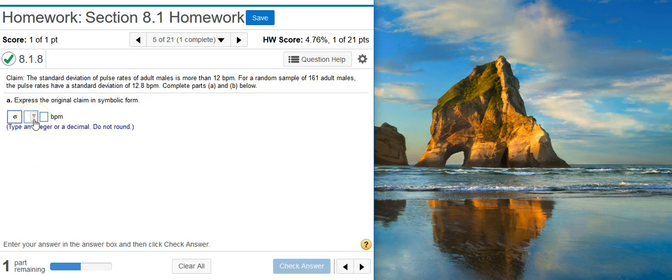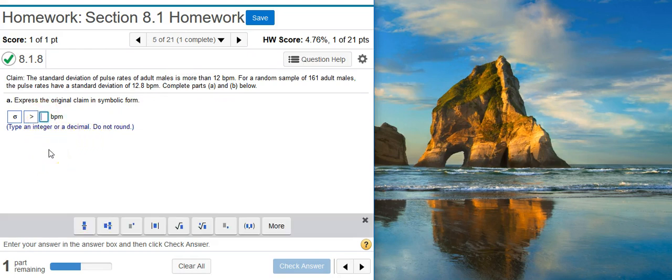And then the next drop-down, we want to look and see what does the claim say about which inequality symbol we should be using. Here it says standard deviation is more than 12. So we want to select greater than. And then our claimed value is that value from the claim, which is 12.